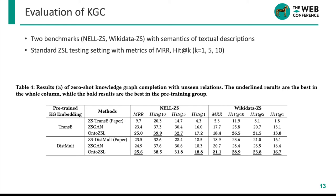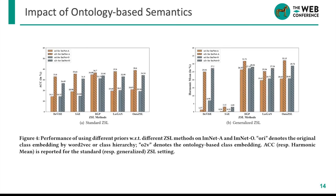Our onto-ZSL achieves the best results compared with text-based relation semantics used in the baselines. We further validate the effectiveness of our ontology-based class semantics by replacing the original class semantics used in the baselines with our learned class embeddings and comparing the performance change. We find that other baselines achieve higher performance when using the ontology-based class semantics, showing that our ontological schema with richer class semantics actually performs better. We also found that with the same class semantics, our onto-ZSL and other generative-based methods such as LSR can outperform other ZSL methods, especially those using graph neural networks such as DGP.